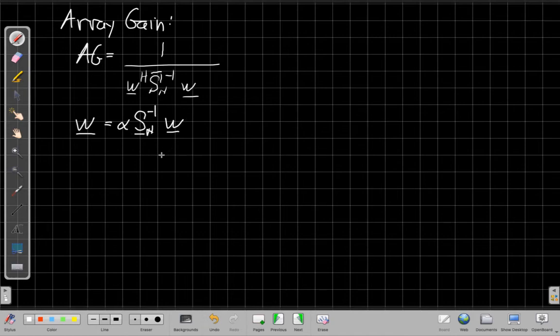That is what we get for the array weights here, where alpha is the gain we use for the unity gain constraint. I'm sorry, not W here, what am I thinking? This is V naught. So it's the manifold for the look direction times the SN inverse times the gain term. Make sure that we have unity gain in the desired look direction.